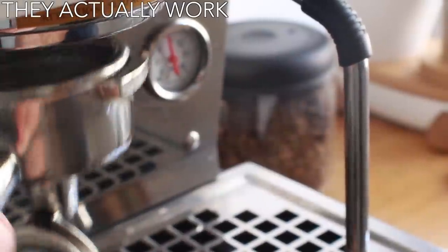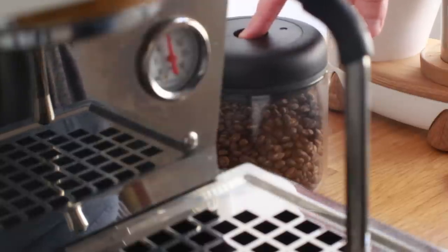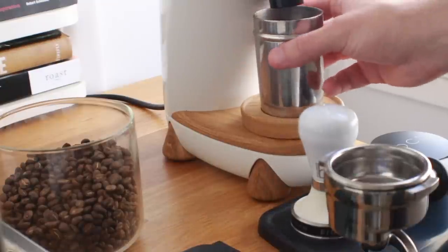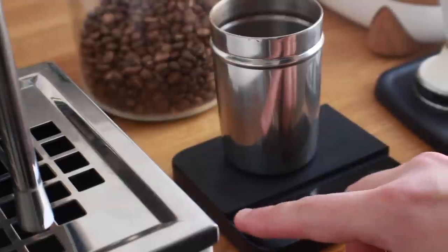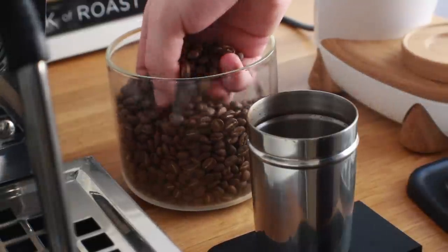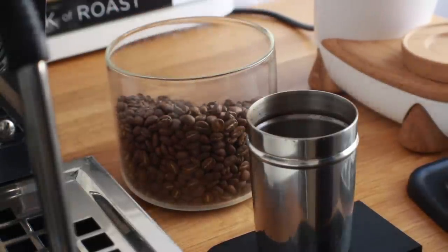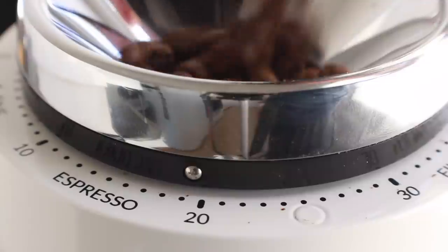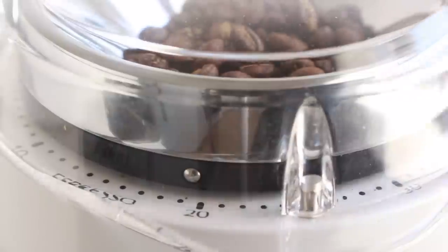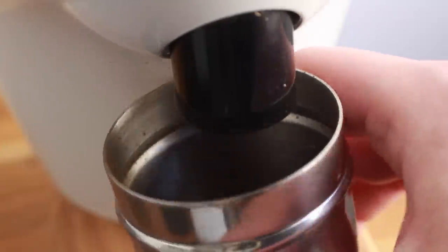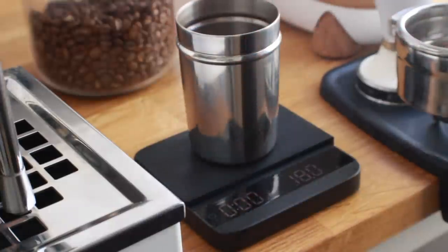And last but certainly not least, they actually work. So I put this coffee away about two months ago. I roasted it myself, I'm very familiar with this coffee. This is actually from my first release at Little Giant Coffee. This is an Ethiopian, it's very fruity and floral. I put this away in the Atmos the day of roast and thought, you know, I'm going to come back to this in a couple months and see what I think. So I'm going to grind some up, pull a shot, smell these grounds, and just see if there's any noticeable difference.